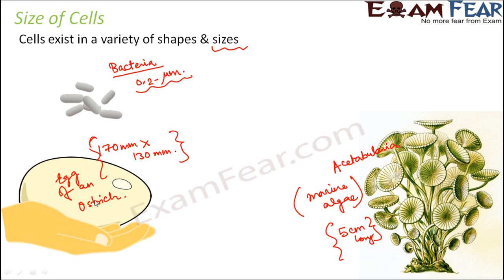Now regarding this ostrich egg, you might be wondering why it is so big. Because this entire egg of an ostrich contains all the food deposits which would be needed for the growing embryo — so everything is present inside this egg.